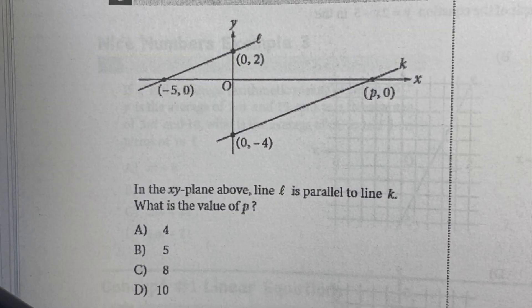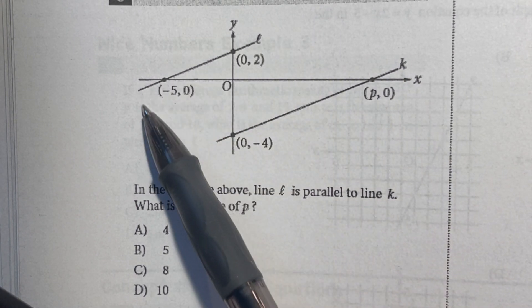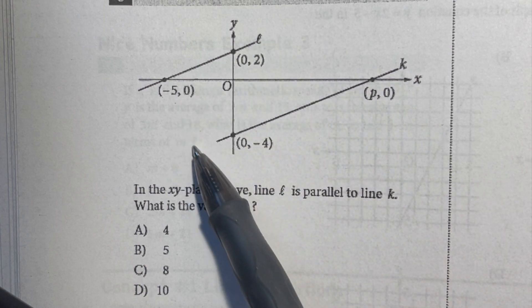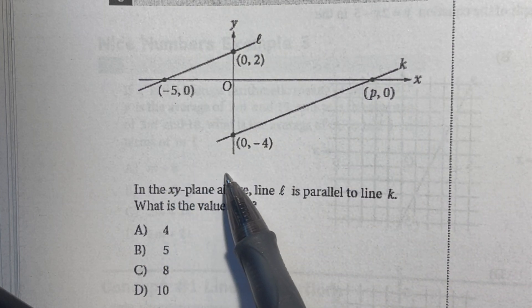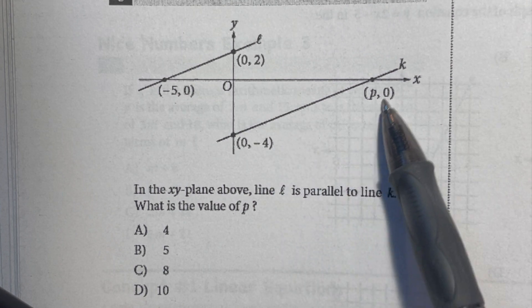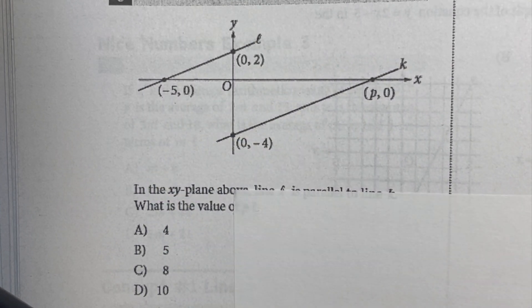I'm going to show you the bubble sheet is a ruler strategy. Now this only applies to pictures for geometry problems that do not say 'figure not drawn to scale.' As long as you don't see that under the picture, that means everything about this picture is accurate. So what I'm going to do is I'm going to pretend this paper is my bubble sheet.